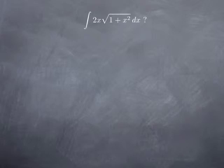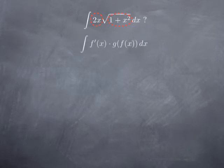Basically what we know so far is how to integrate a trig function or a linear combination of powers of the variable. So this doesn't fall into one of these categories. However, notice that 1 plus x squared is inside the square root, and we have 2x outside, which is the derivative of 1 plus x squared.